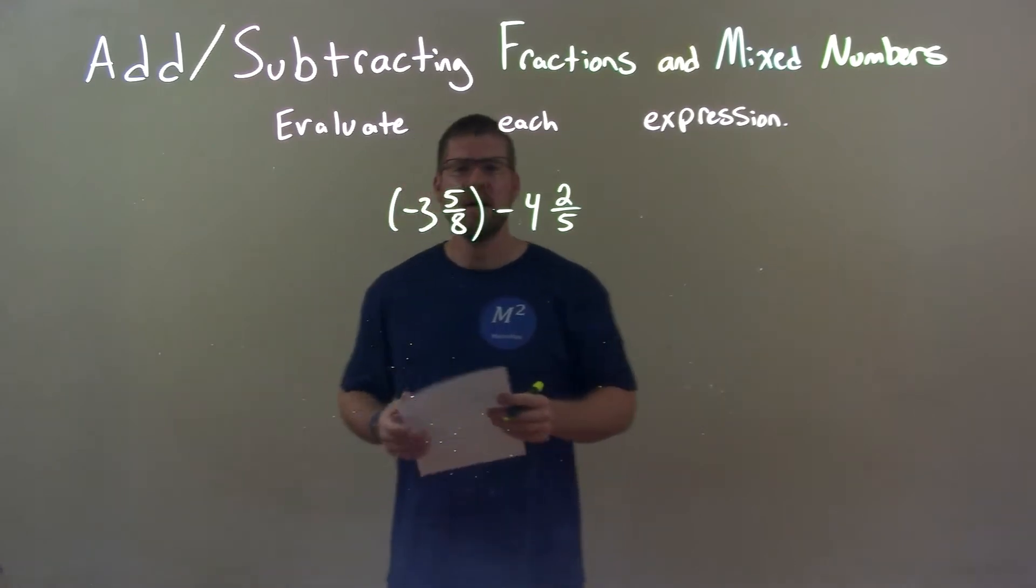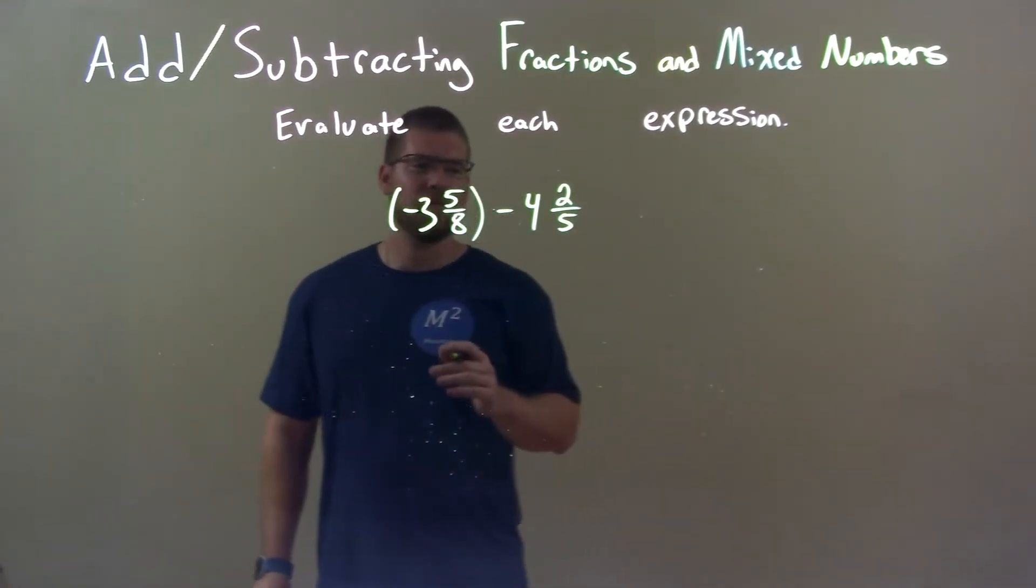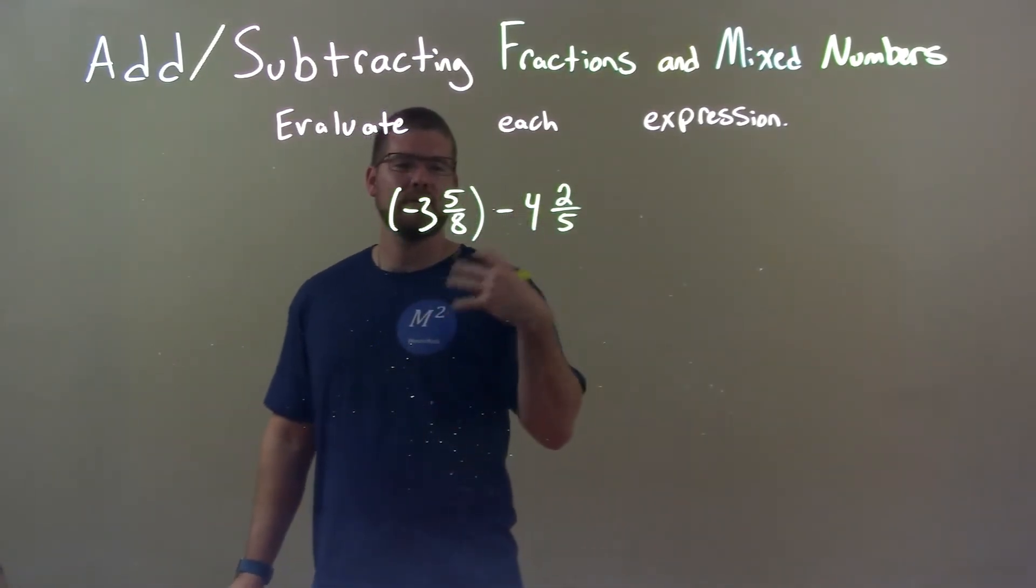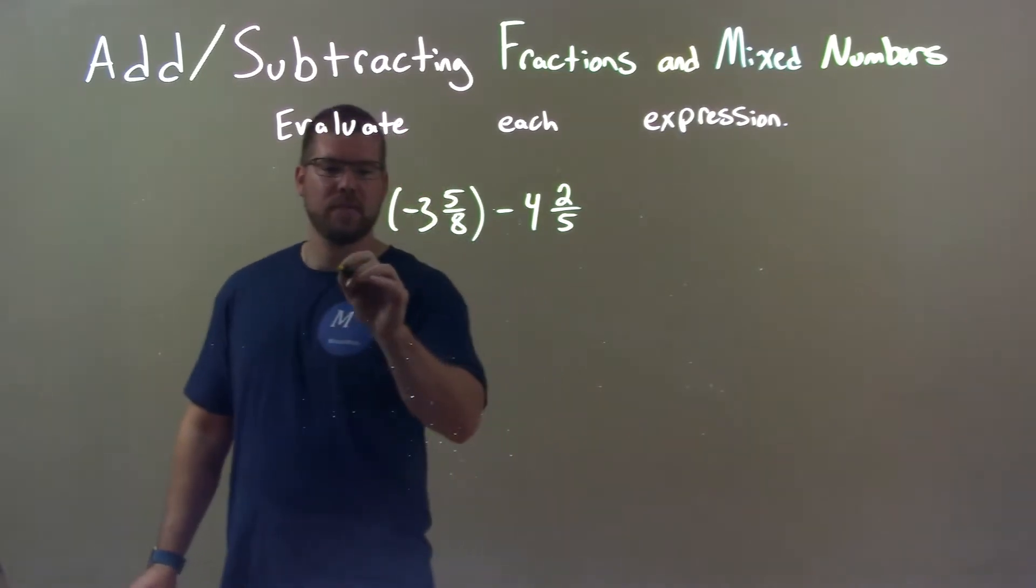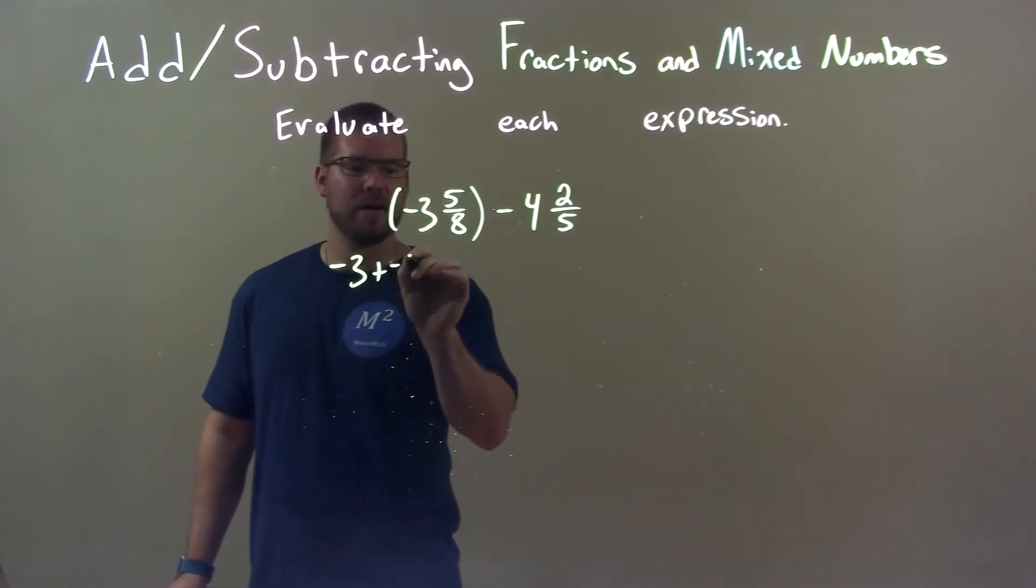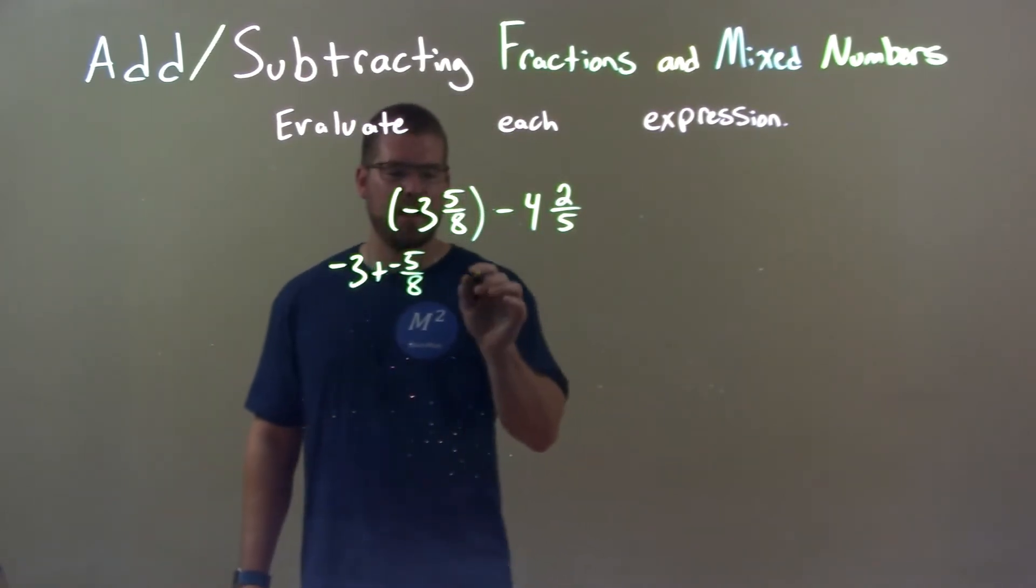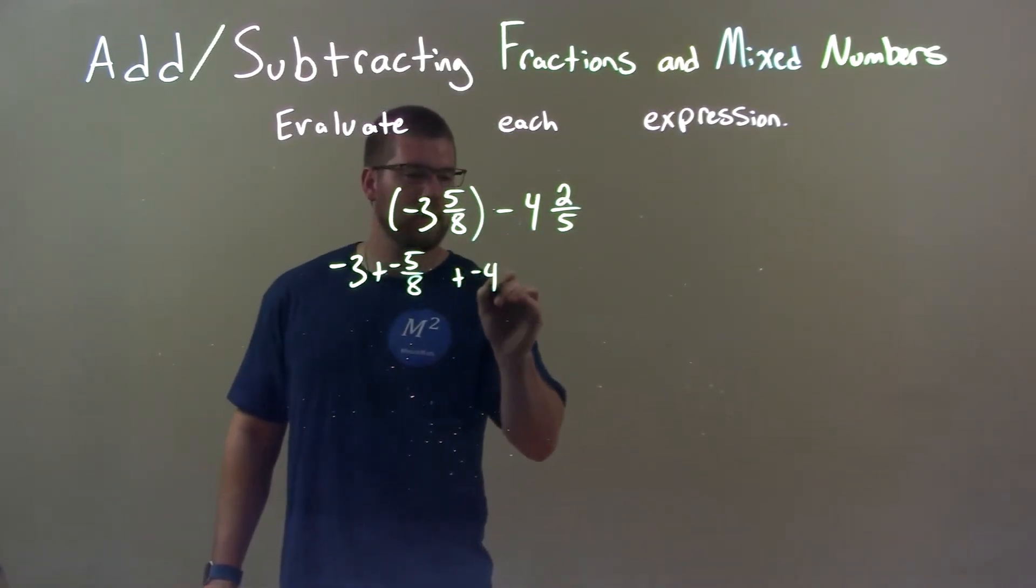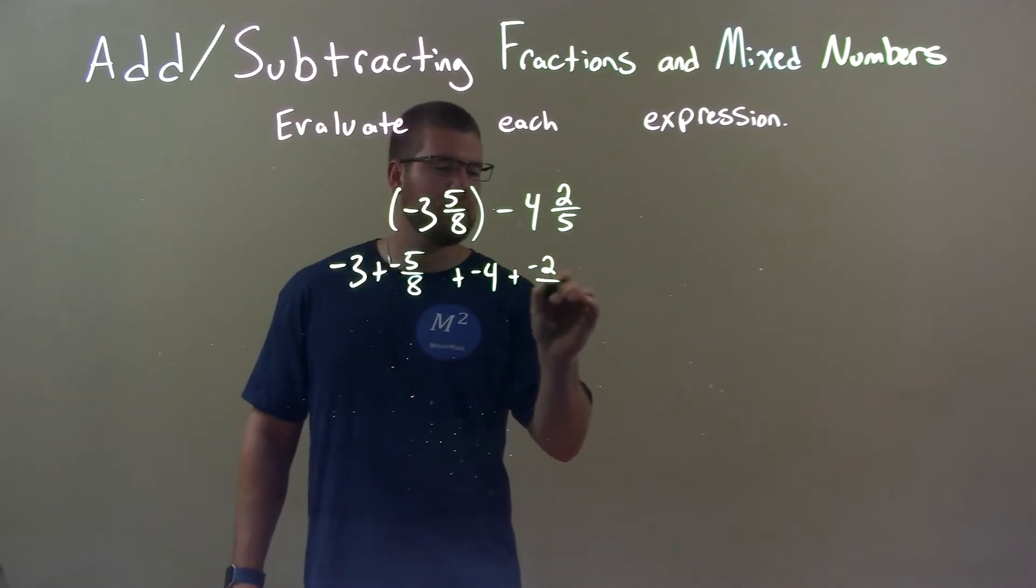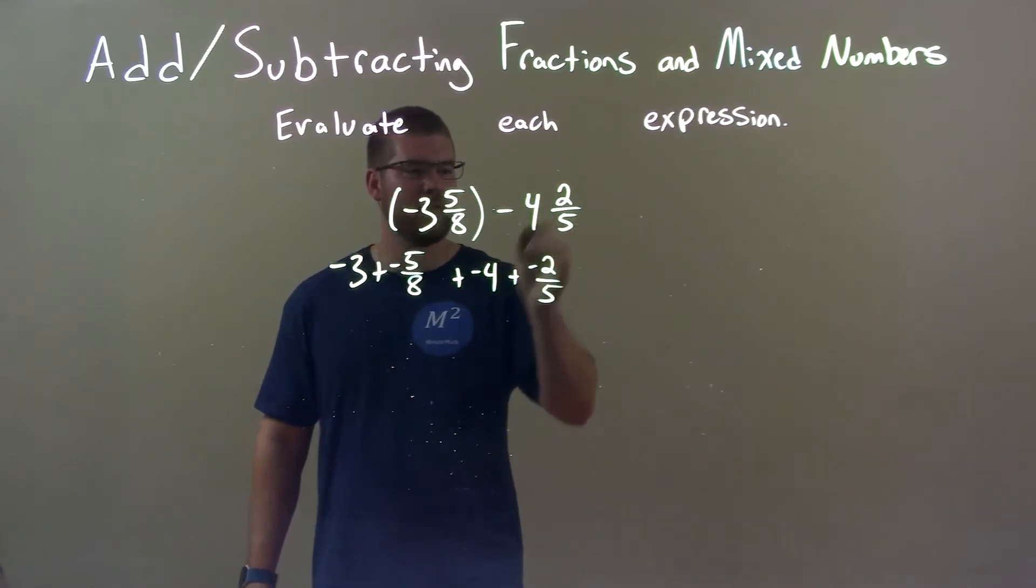Okay, so first thing I want to do is break this down to have our whole numbers and our fractions for each one. So negative 3 plus negative 5 eighths, and then subtracting is the same thing as adding negative, plus negative 4 plus negative 2 fifths. Make sure you bring the negative to both parts.